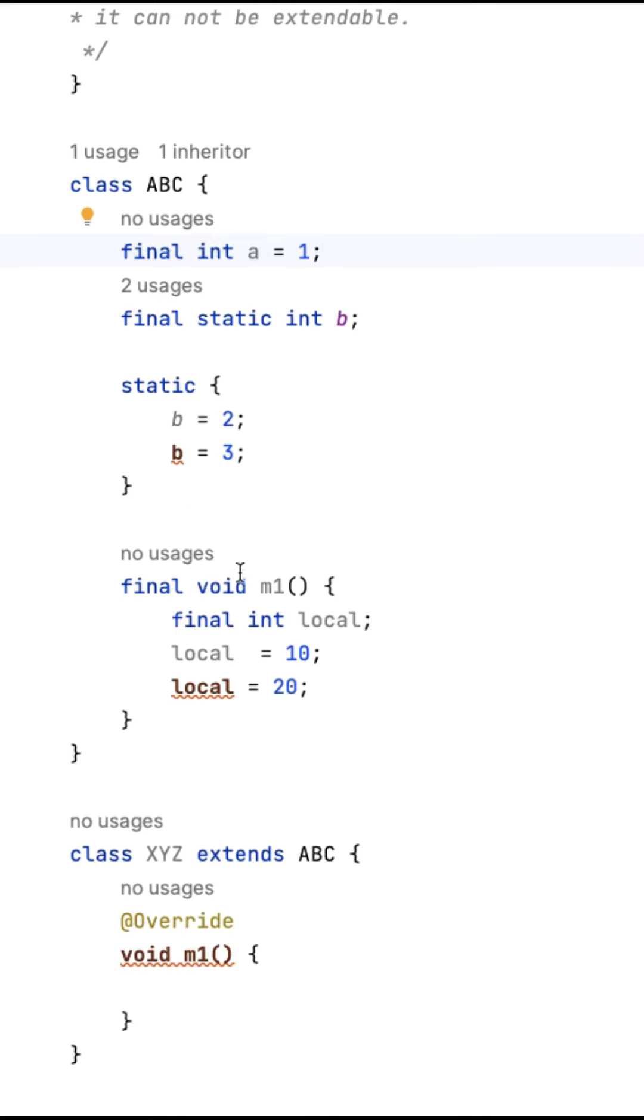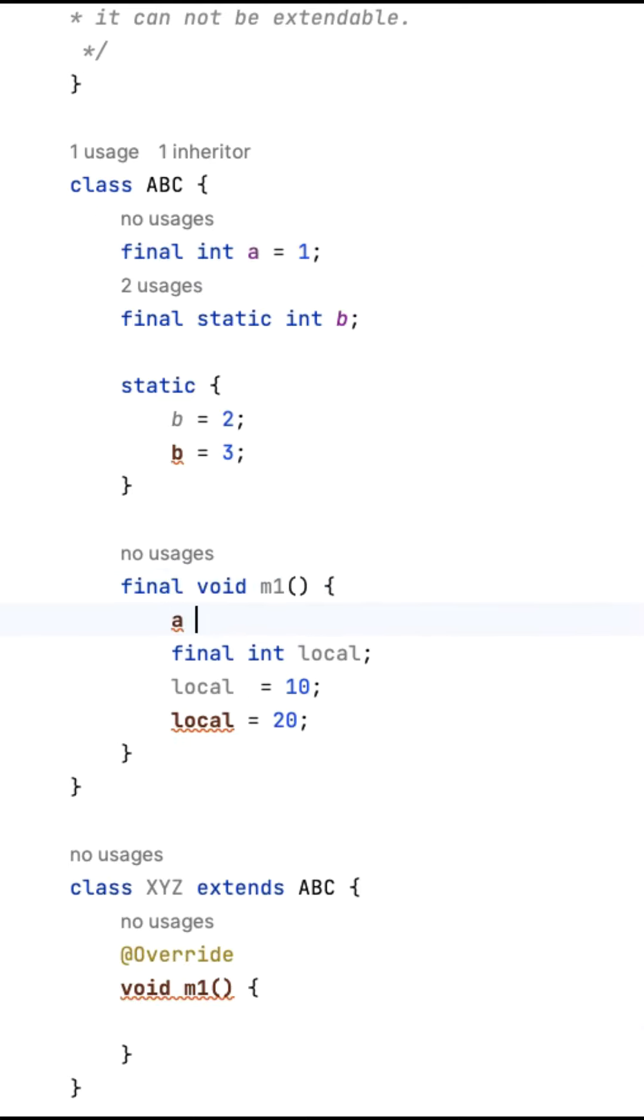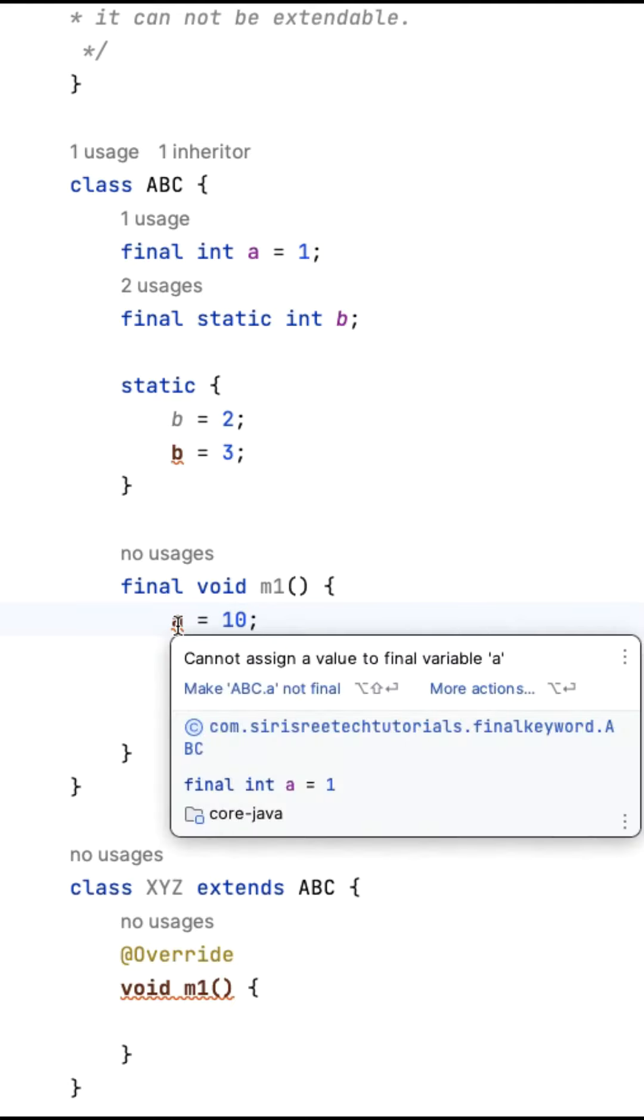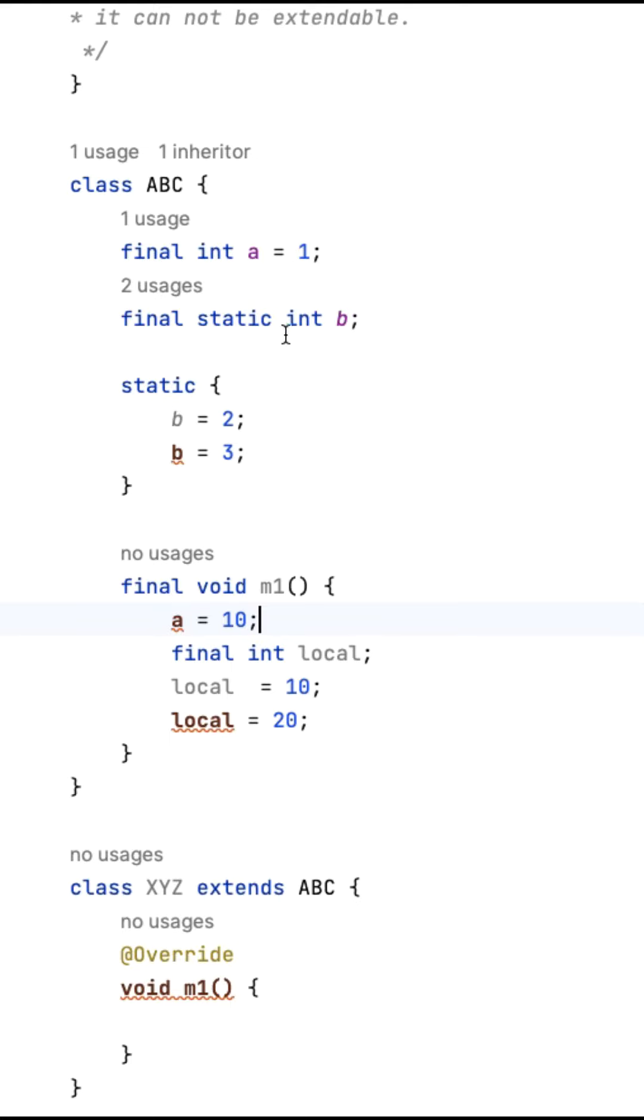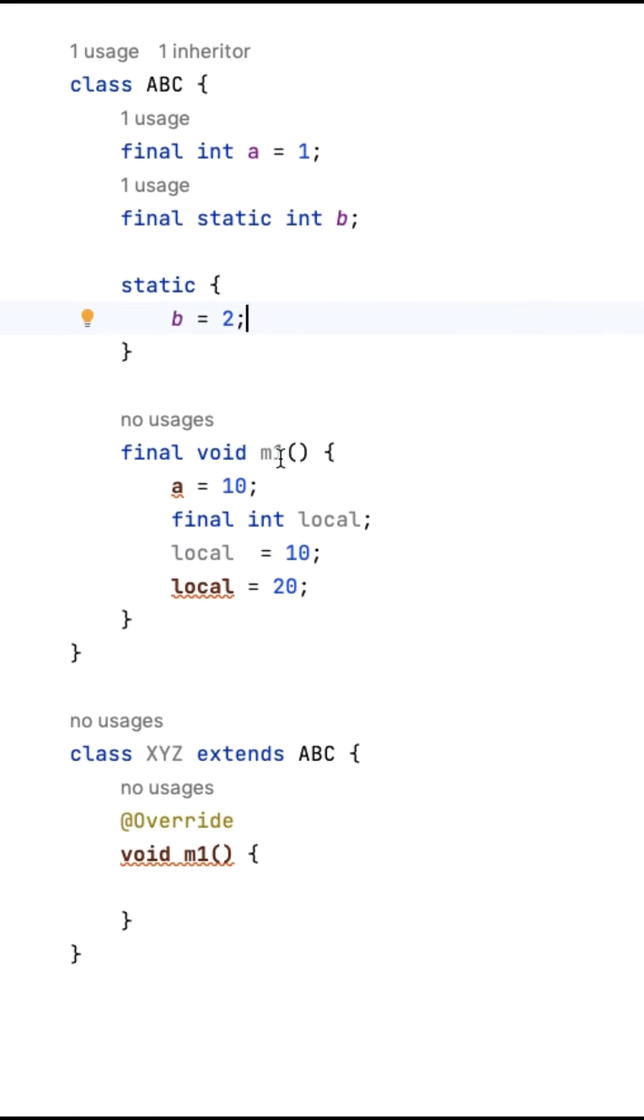In this non-static method, we can access the value of a. If I try to assign any other value, it will give a compilation error that cannot assign a value to the final variable. We can create a final variable and assign it anywhere only once. If you try to assign another time, it will give a compilation error.